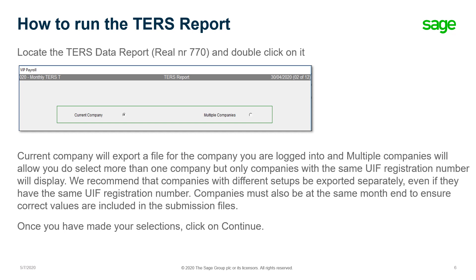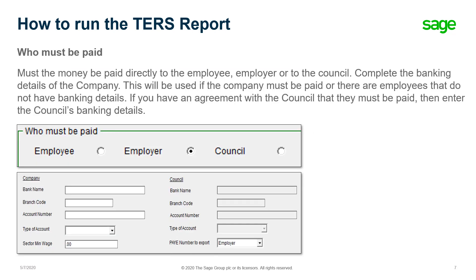Once you have made your selections, click on continue. In the selection for who must be paid, you have three options. You can either select that the money must be paid to the employee, to the employer, or to the council.